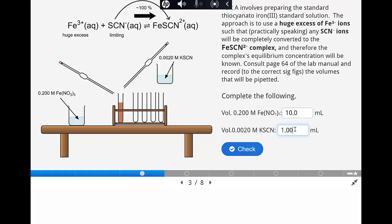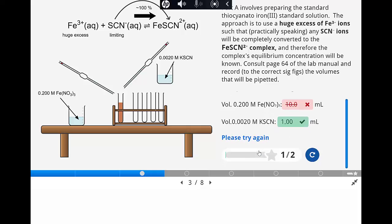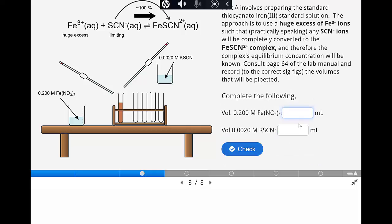In this example, you see that I initially type in values with the incorrect level of precision that is not enough significant figures. Only when the correct precision is shown is the answer marked correct.